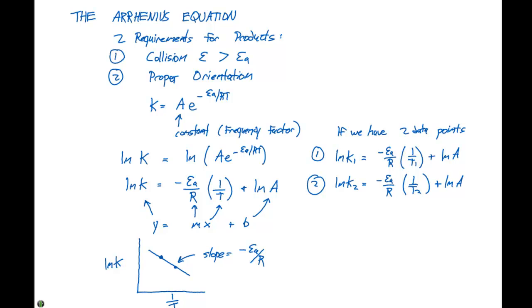If we rearrange these two and we set the natural log of A, which is a constant, equal to each other, we can get the following expression. We'll have ln of K2 minus ln of K1 is going to equal negative Ea divided by R times 1 over T1 minus 1 over T2.